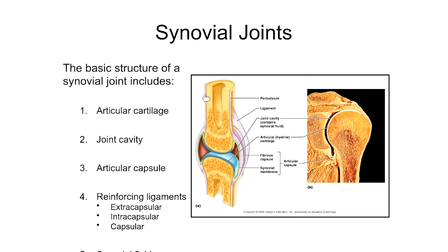Now let's talk about the structure of diarthroses, or synovial joints, and what makes them so freely movable. This picture shows an artist's representation of a simplified synovial joint alongside an actual shoulder joint cut longitudinally from a cadaver. In the basic synovial joint diagram, bones are shown in yellow with a large cavity in between that is filled with synovial fluid. Synovial fluid is thick and greasy — the root word actually means egg white — and it resists compressive forces where the bones come together.